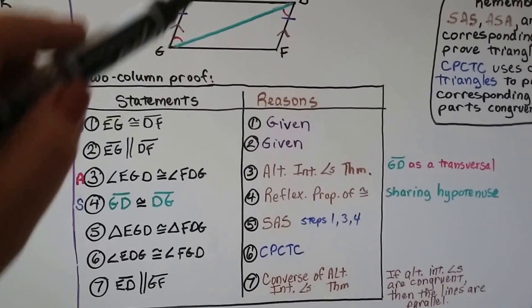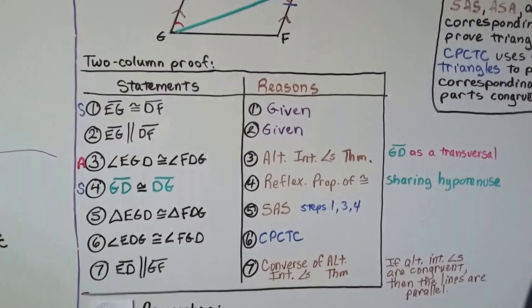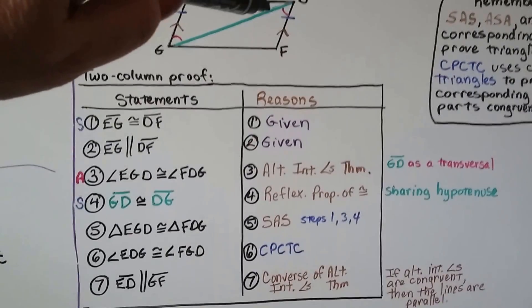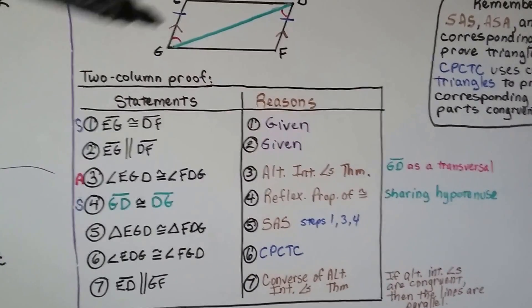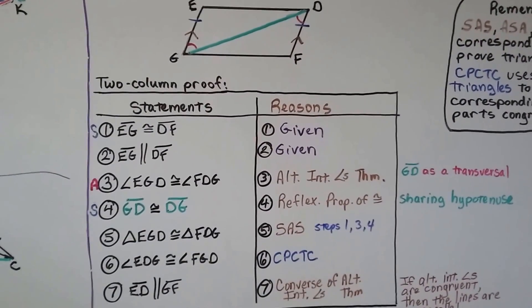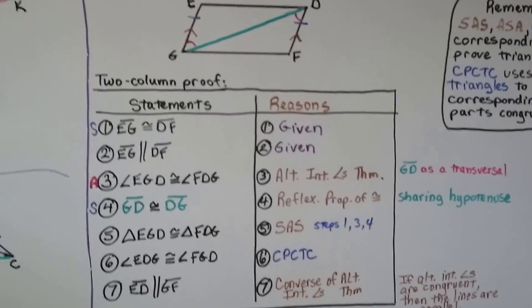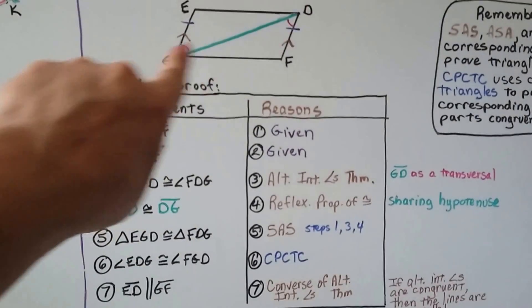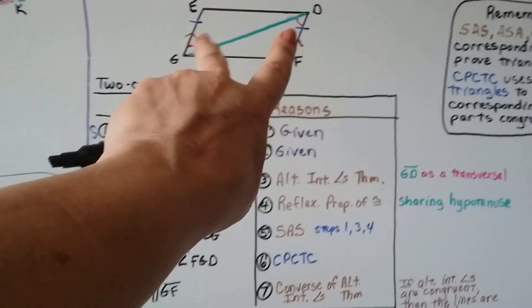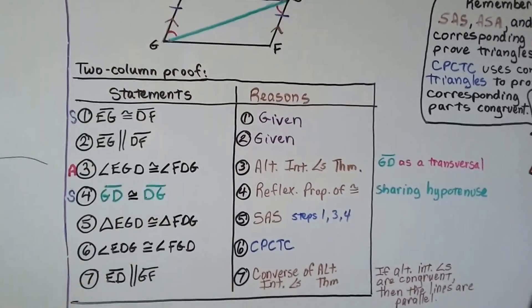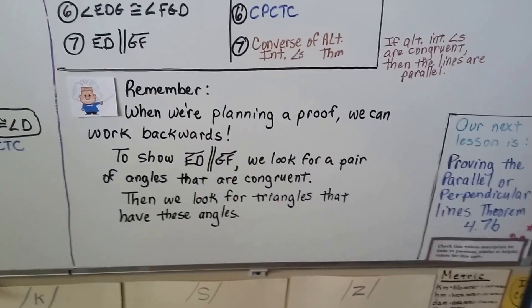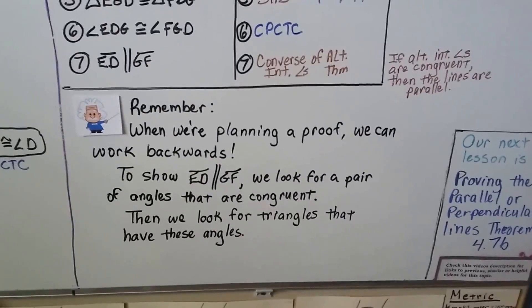Triangle EGD is congruent to triangle FDG by SAS from steps 1, 3, and 4. Angle EDG is congruent to angle FGD by CPCTC. That brings us to what we were trying to prove: segment ED is parallel to segment GF by the converse of the alternate interior angles theorem. The converse says if two angles are alternate interior angles and they're congruent, then the lines are parallel. When planning a proof, we can work backwards — look for congruent angles, then find triangles containing those angles.